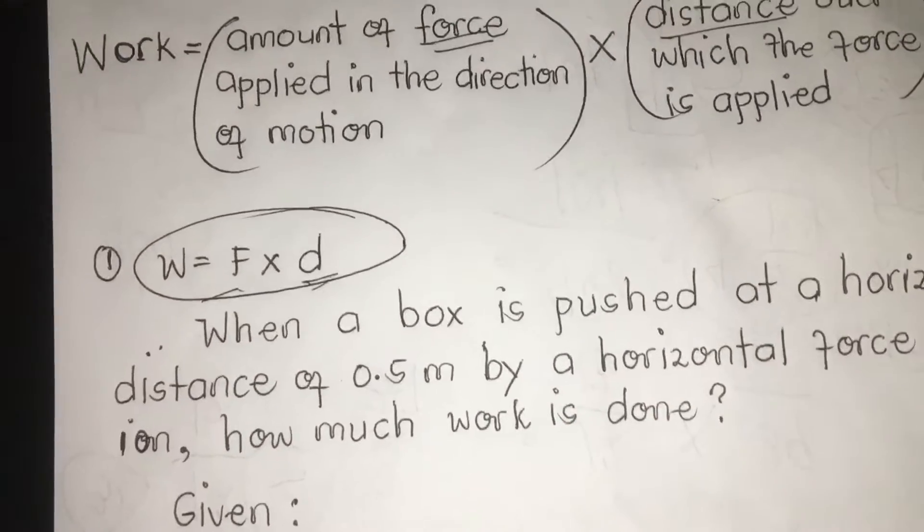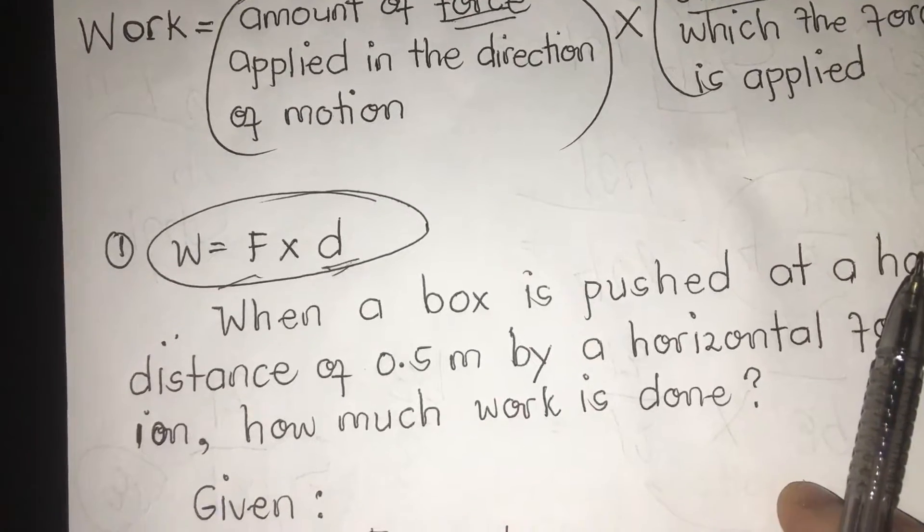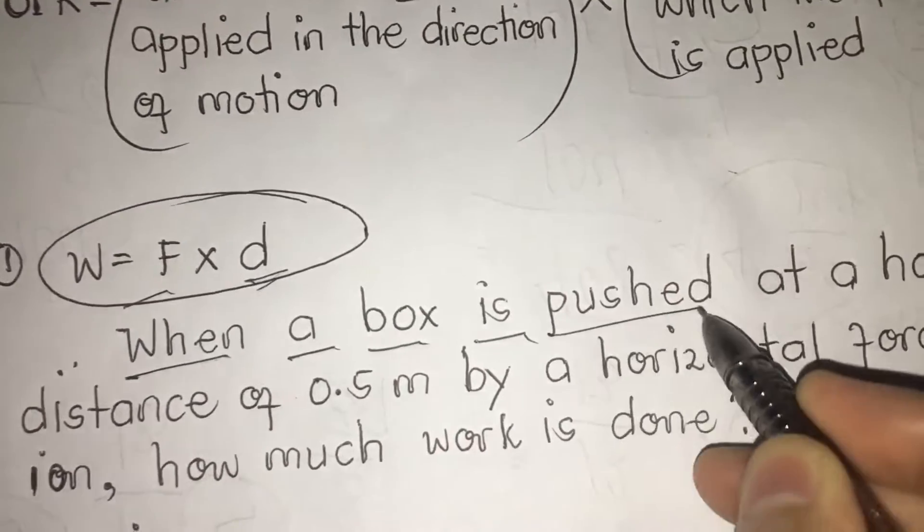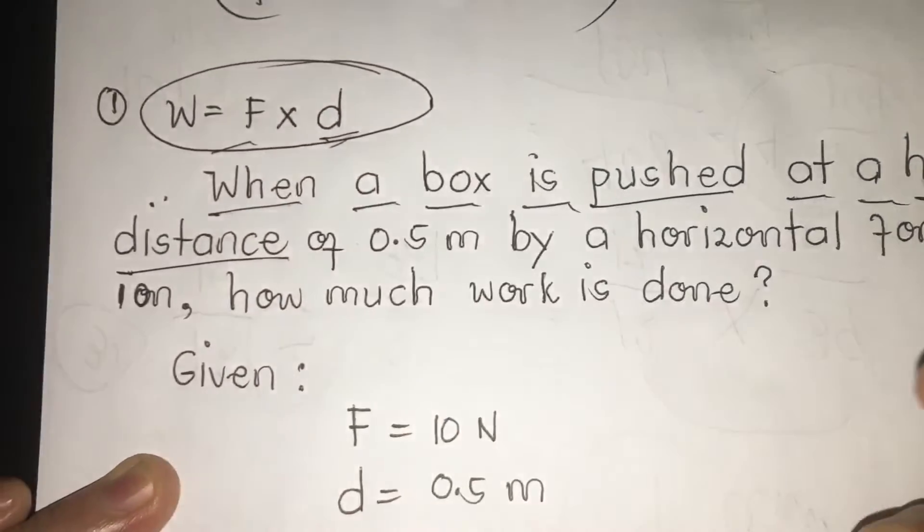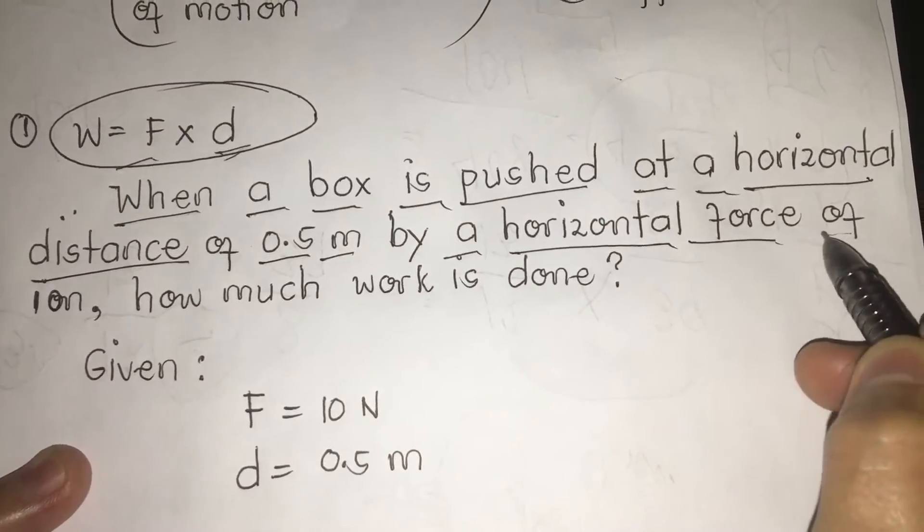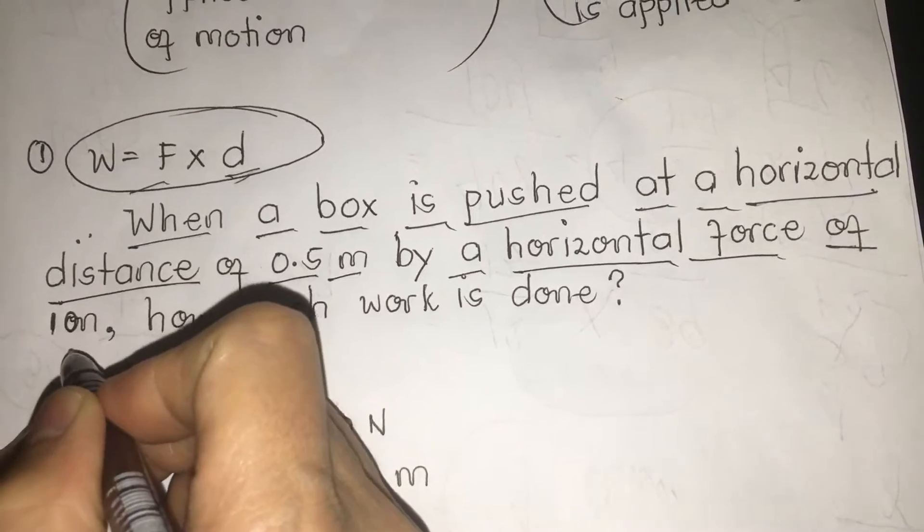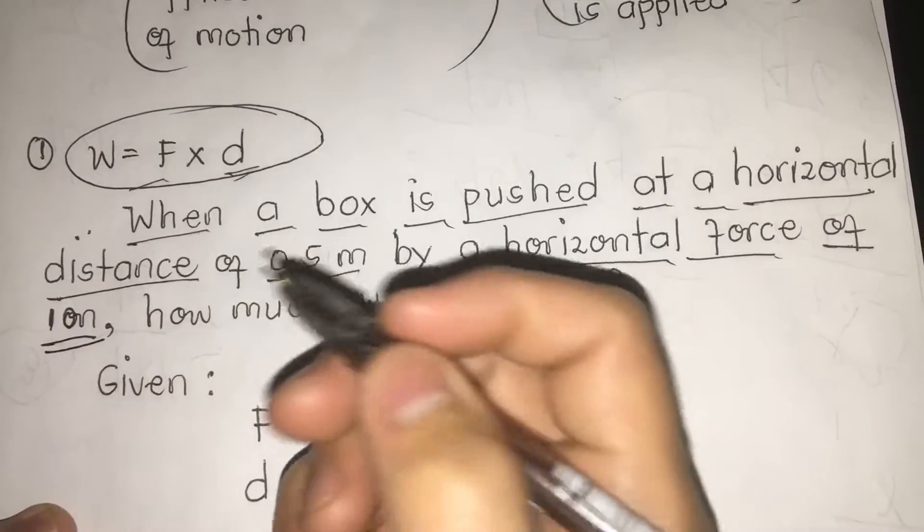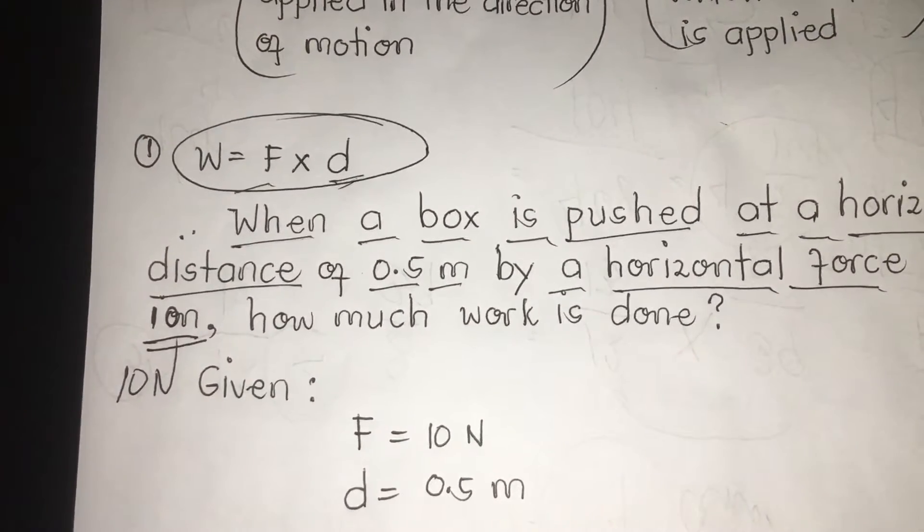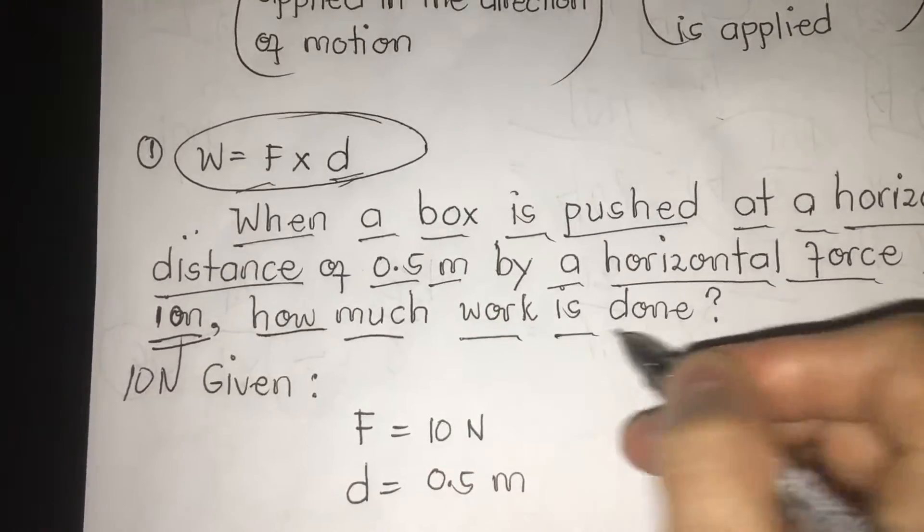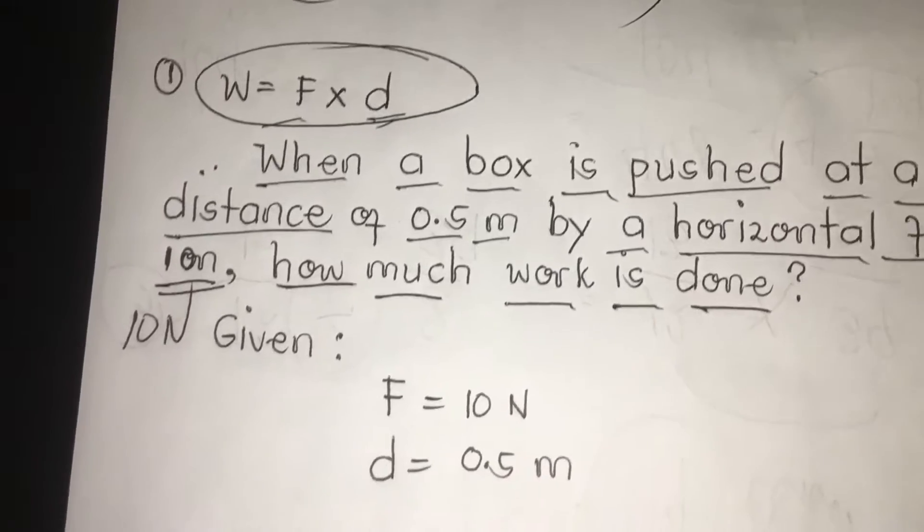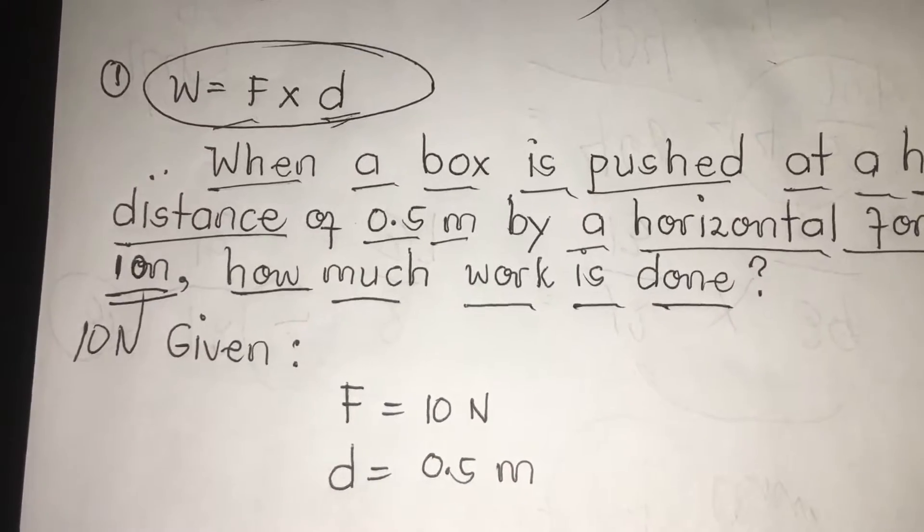Now, class, we have first here an equation. The first equation is when a box is pushed at a horizontal distance of 0.5 meter by a horizontal force of 10 N. How much work is done? So, the question is, we're going to find out the work, the equivalent, the force, and the distance.